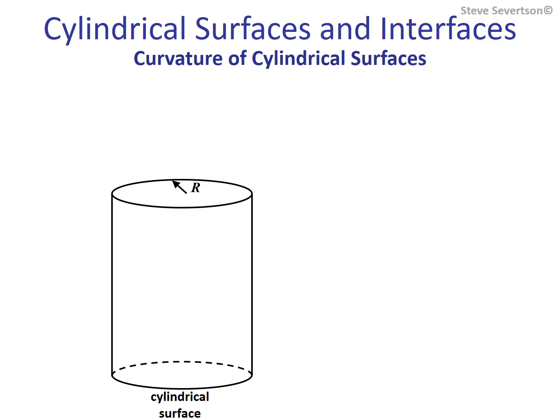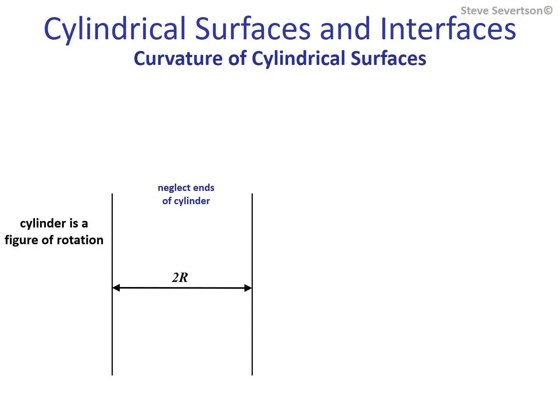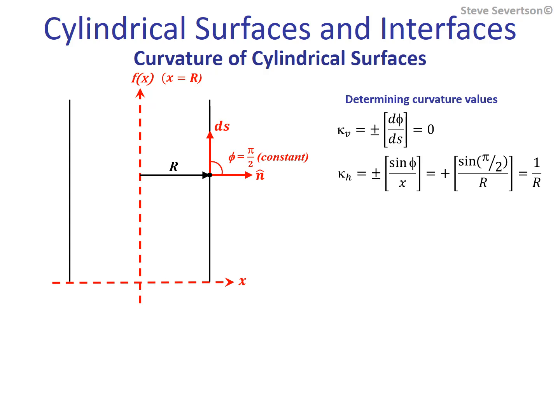Now let's develop the expression from our equations. This begins by collapsing the cylinder into its two-dimensional representation, which consists of two parallel lines separated by a distance 2R. For situations where we apply the cylindrical meniscus approximation, the ends of the cylinder can be neglected without introducing significant error. To determine curvature, we place the x-axis underneath the cylinder and the z-axis bisects the shape. Only half the cylinder needs to be considered. A unit normal is placed on the outside; the arc length is a vertical line, meaning phi is constant and equal to pi over 2. From the definitions for curvatures in the vertical and horizontal planes, the total curvature is equal to 1 over R.